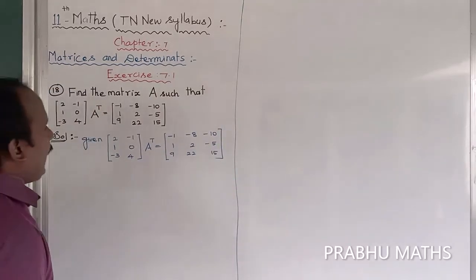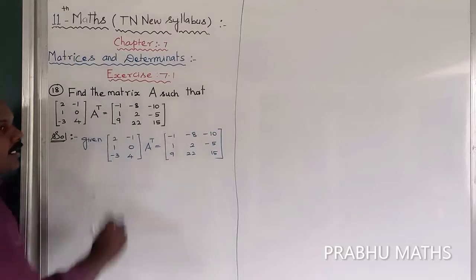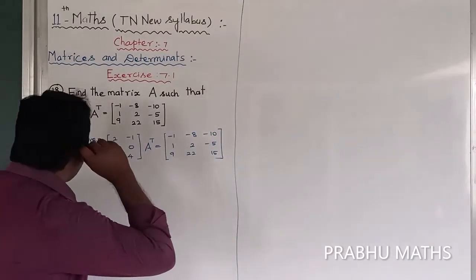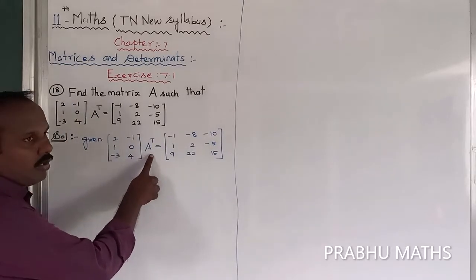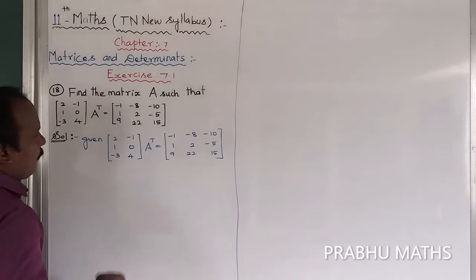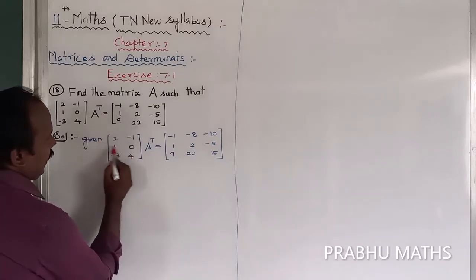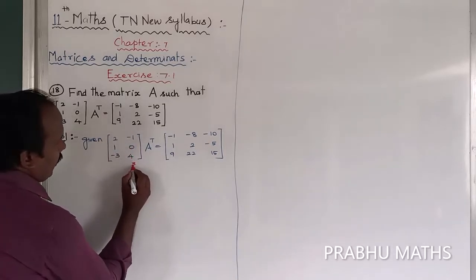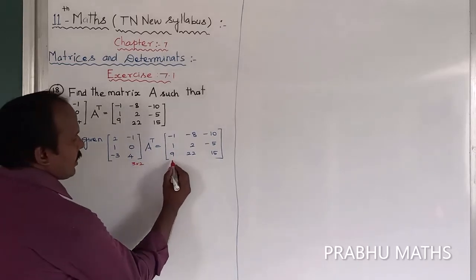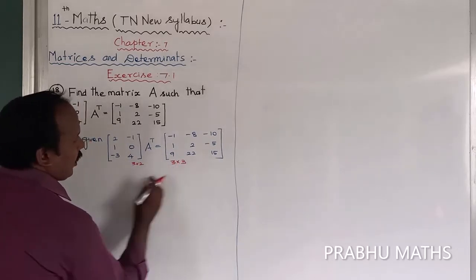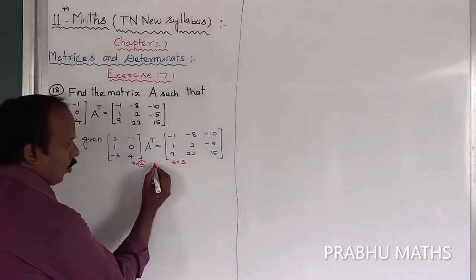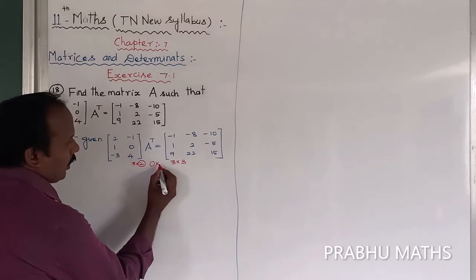To find the value of matrix A, we first need to find the order of A-transpose. The first matrix has 3 rows and 2 columns — that is a 3×2 matrix. The answer should be a 3×3 matrix. First matrix columns must equal second matrix rows.